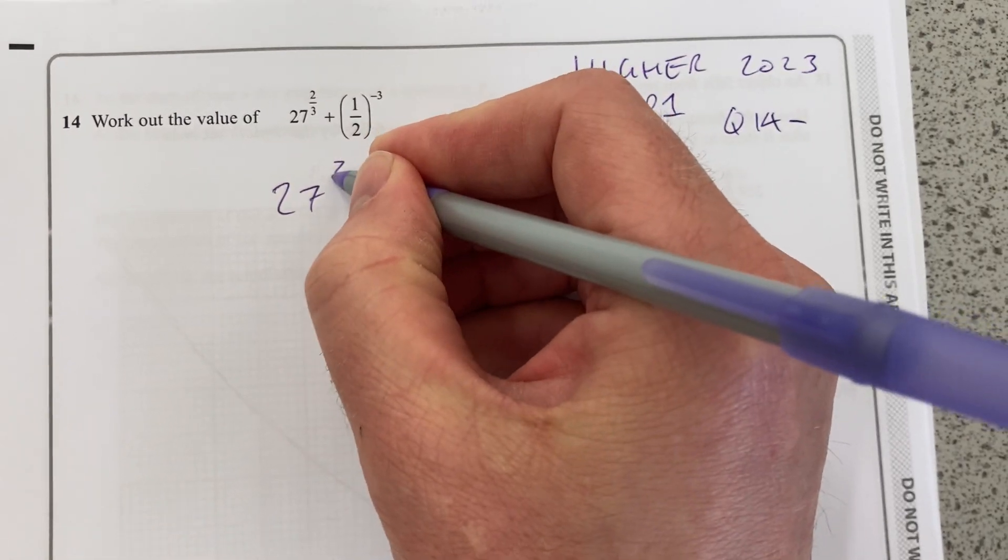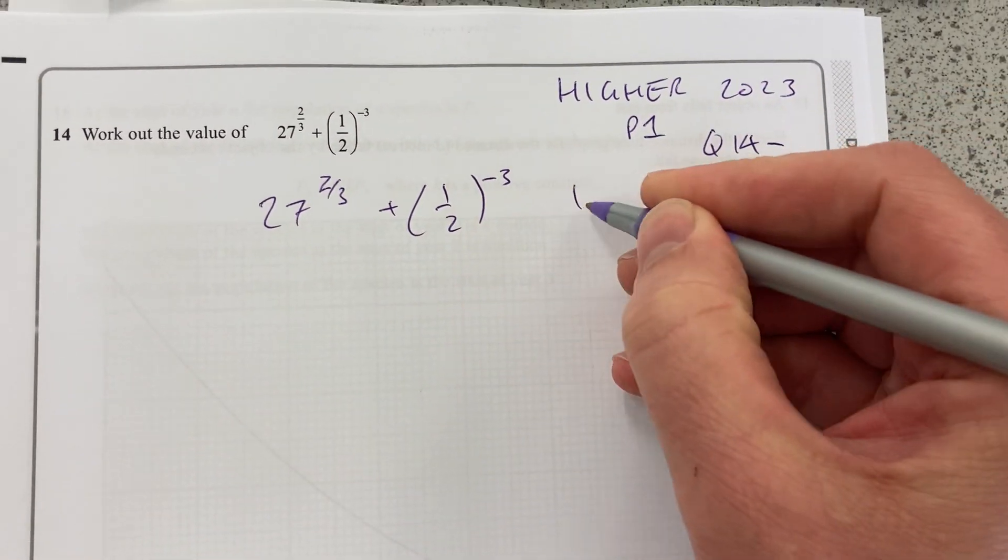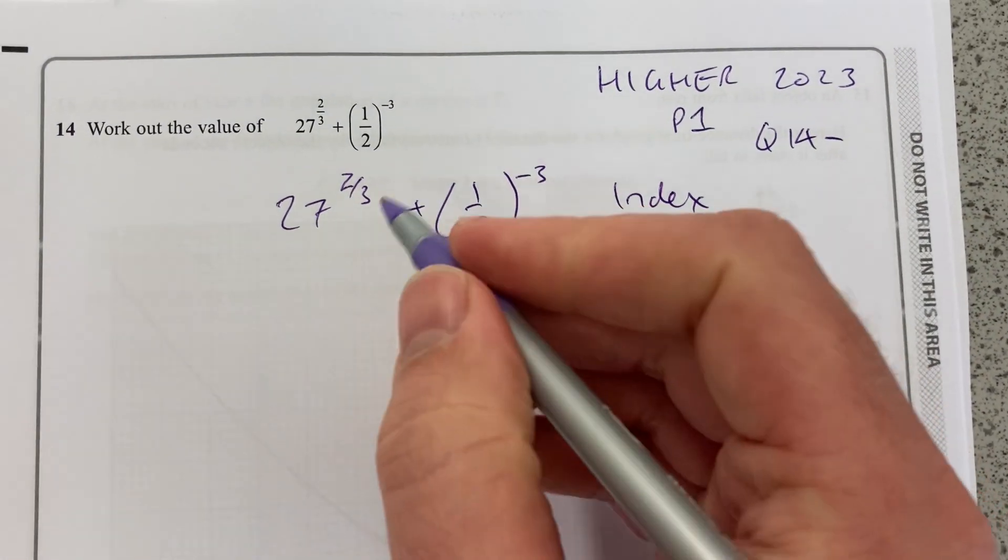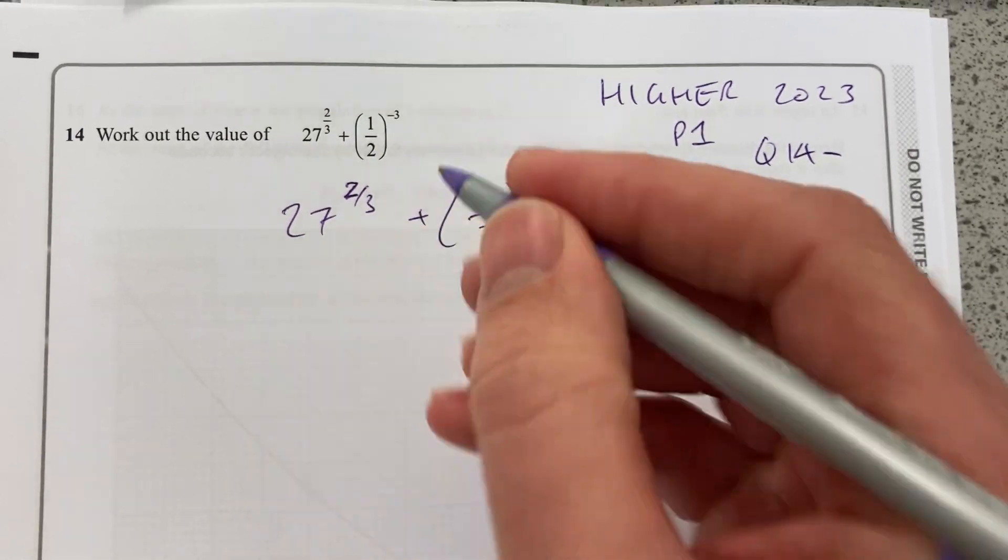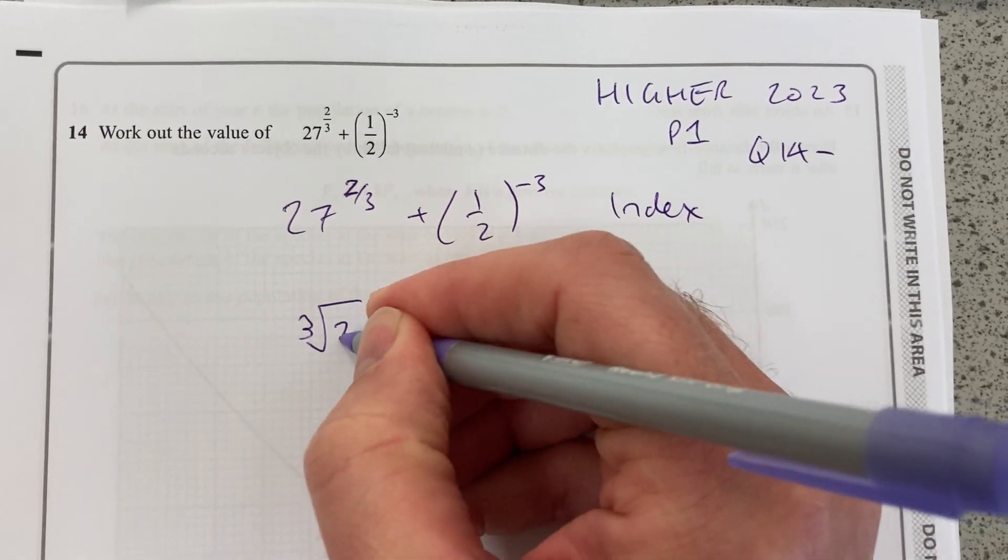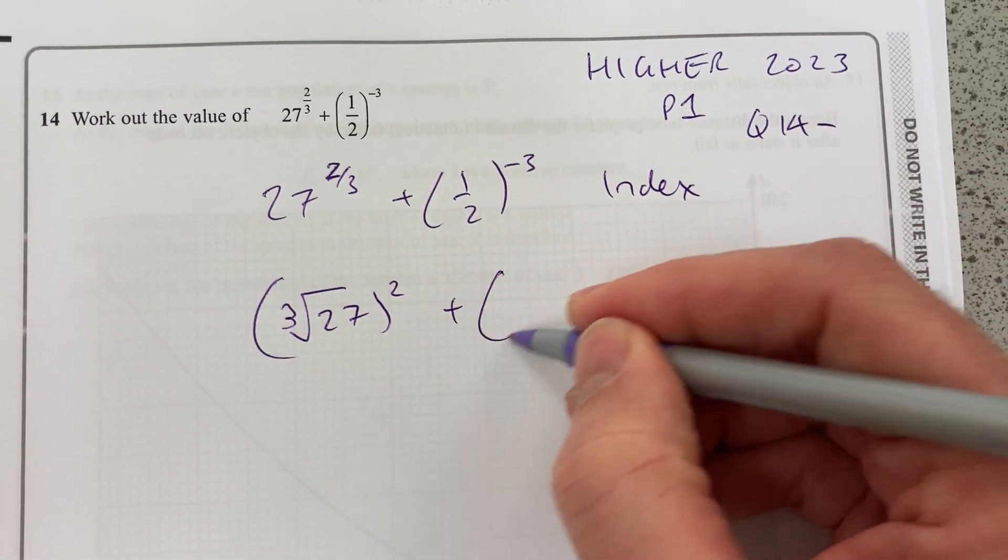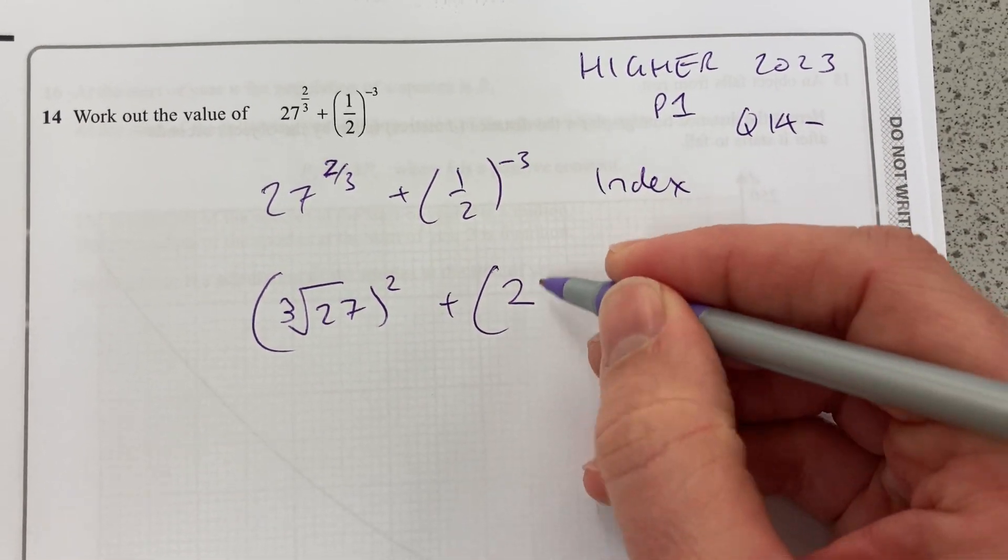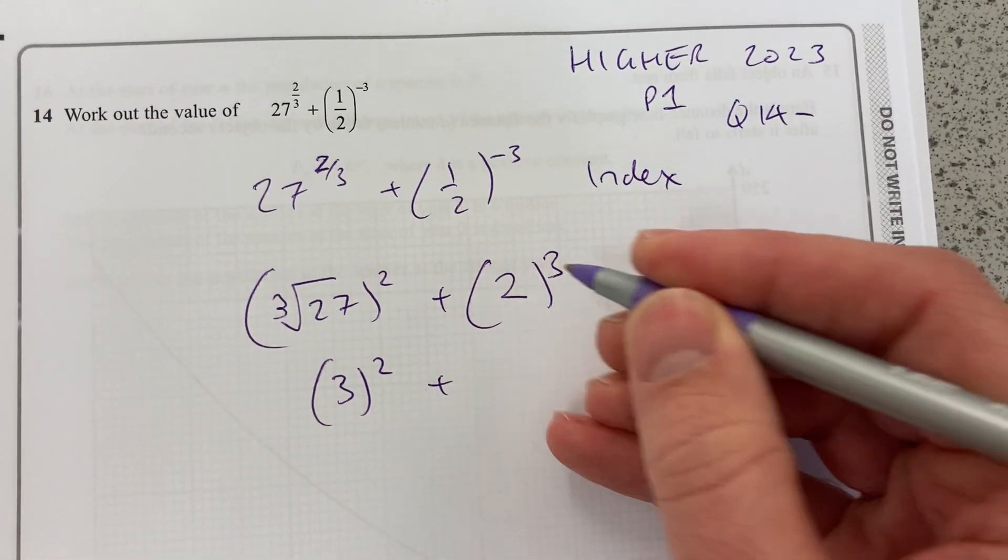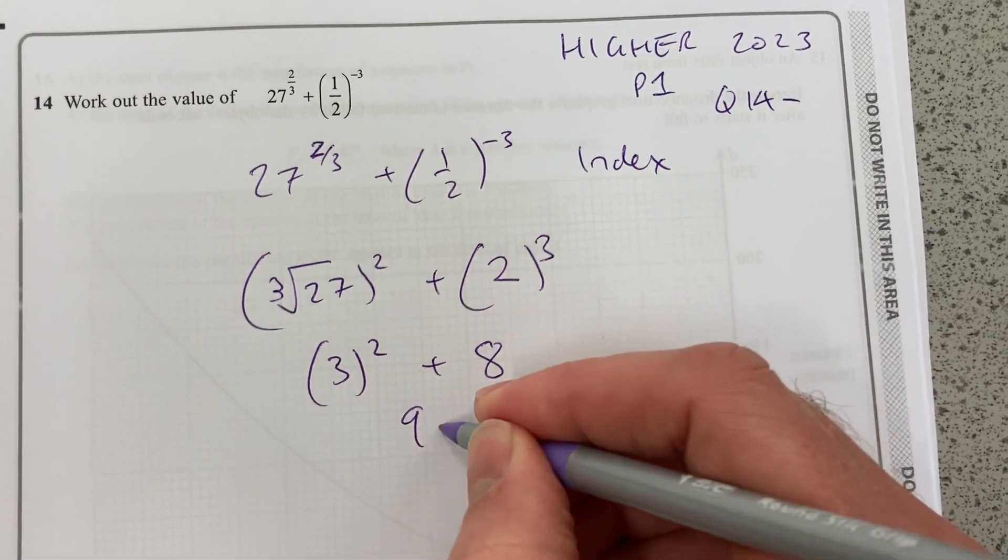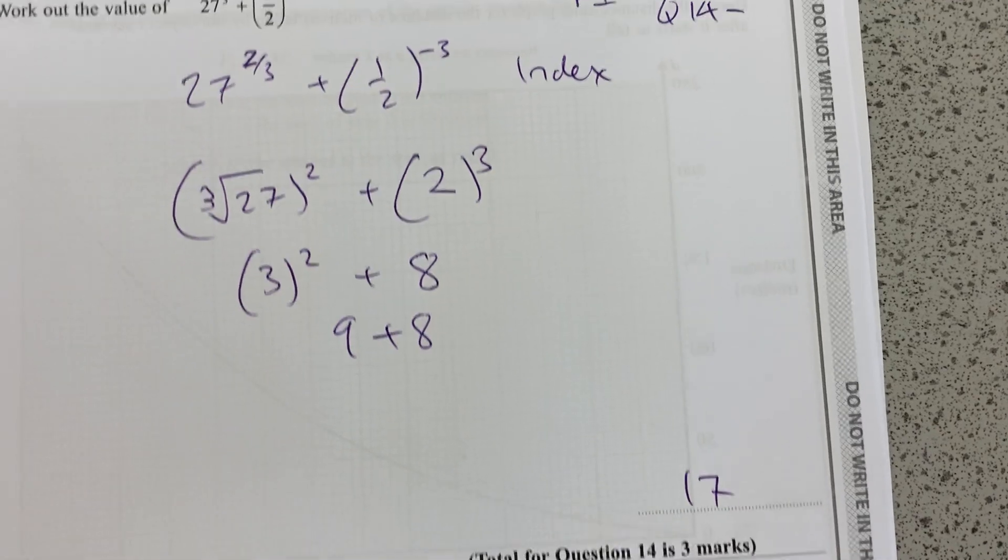Here we have to work out 27 to the two thirds plus a half to the negative three. So it's your index laws we're using here. Fractional often involve the roots. In this case, it'll be the cube root of 27, which we'll square, and negative powers is reciprocal, so I can invert that to be 2. The cube root of 27 is 3, and 2 cubed is 8. So I have 9 plus 8, and that is 17. So that's a nice three mark question there.